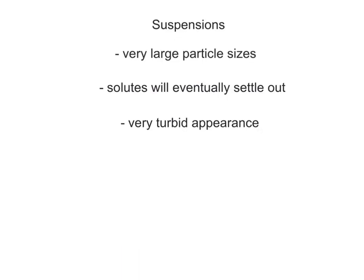The third type of mixture is called a suspension. A suspension is a mixture consisting of very large solutes distributed within a dispersing agent, where the solutes will eventually settle out over time and accumulate at the bottom of the container. Suspensions share the following properties. They have a very large particle size. Their solute particles will eventually settle out with gravity and can be separated by filters. And they have a very turbid, cloudy appearance.